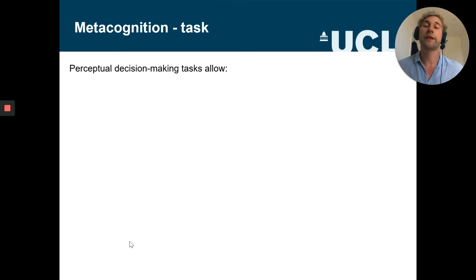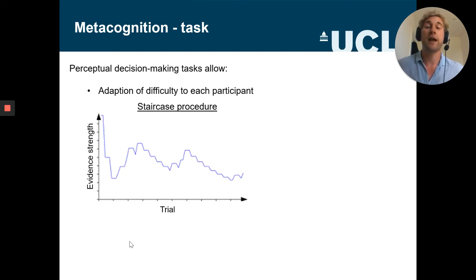First of all, we decided to stick with perceptual decision making even in our online tasks, and the main argument for that is that these kind of tasks enable us to adaptively change the difficulty for each participant. So we use the staircase procedure which is quite widely used in psychophysics, which basically means that on every single trial we slightly change the evidence strength in response to participants' performance. For instance, if a participant gets a decision correct, then we reduce the evidence strength slightly so the task becomes a bit more difficult. And on the other hand, if a person makes incorrect decision, then we make the task easier and increase the evidence strength.